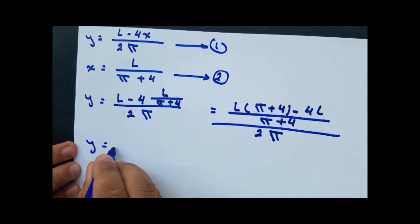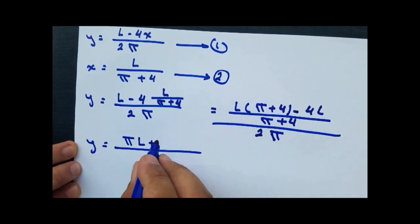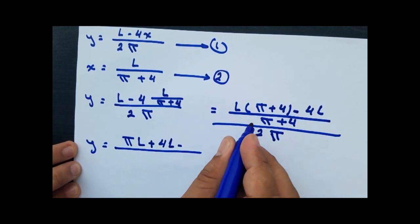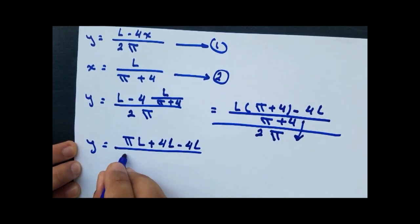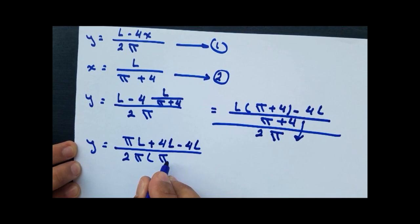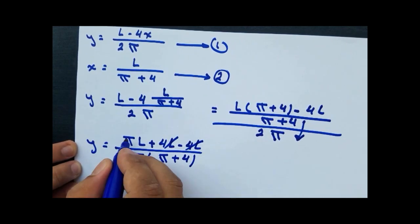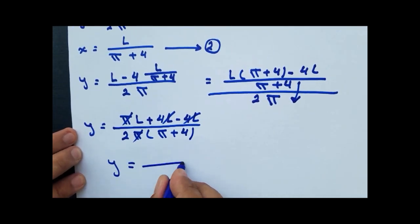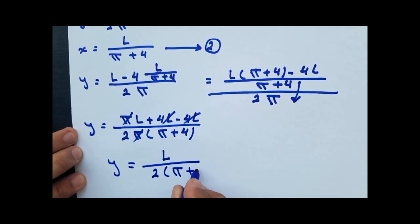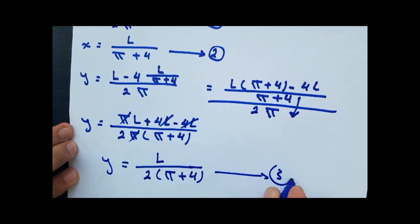Expanding the numerator gives πL plus 4L minus 4L, so the 4L terms cancel. We are left with πL over (π plus 4), divided by 2π. The π cancels, and y equals L over 2 multiplied by (π plus 4). This is equation number 3.